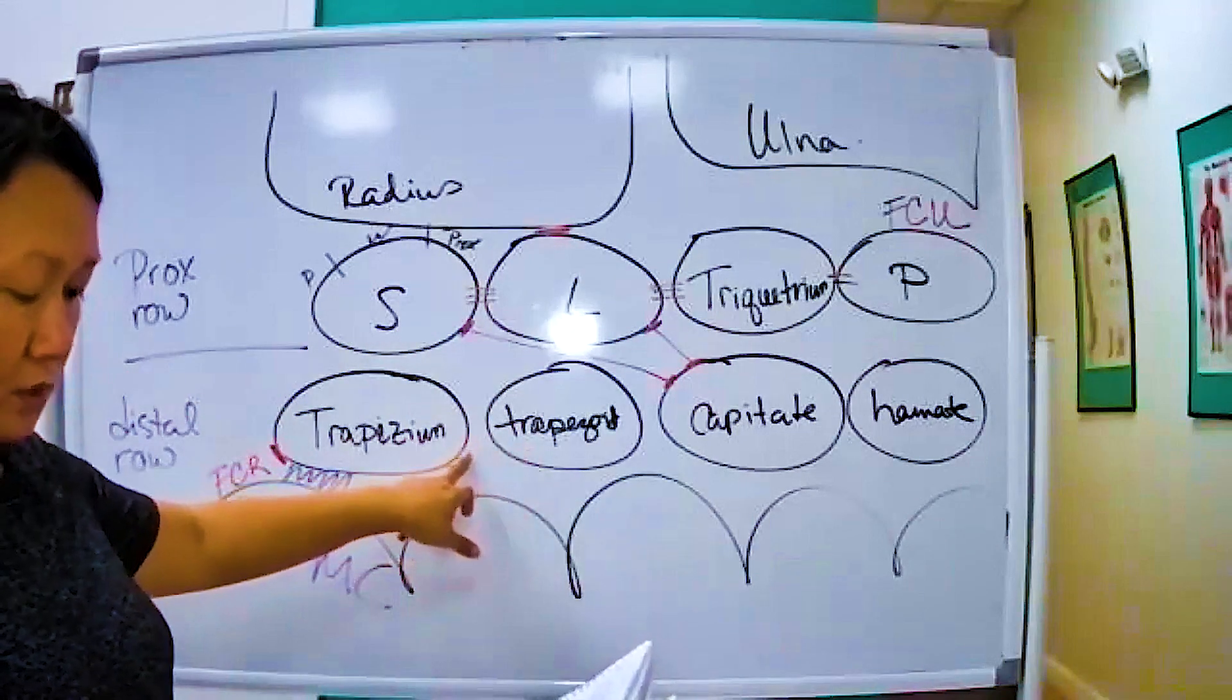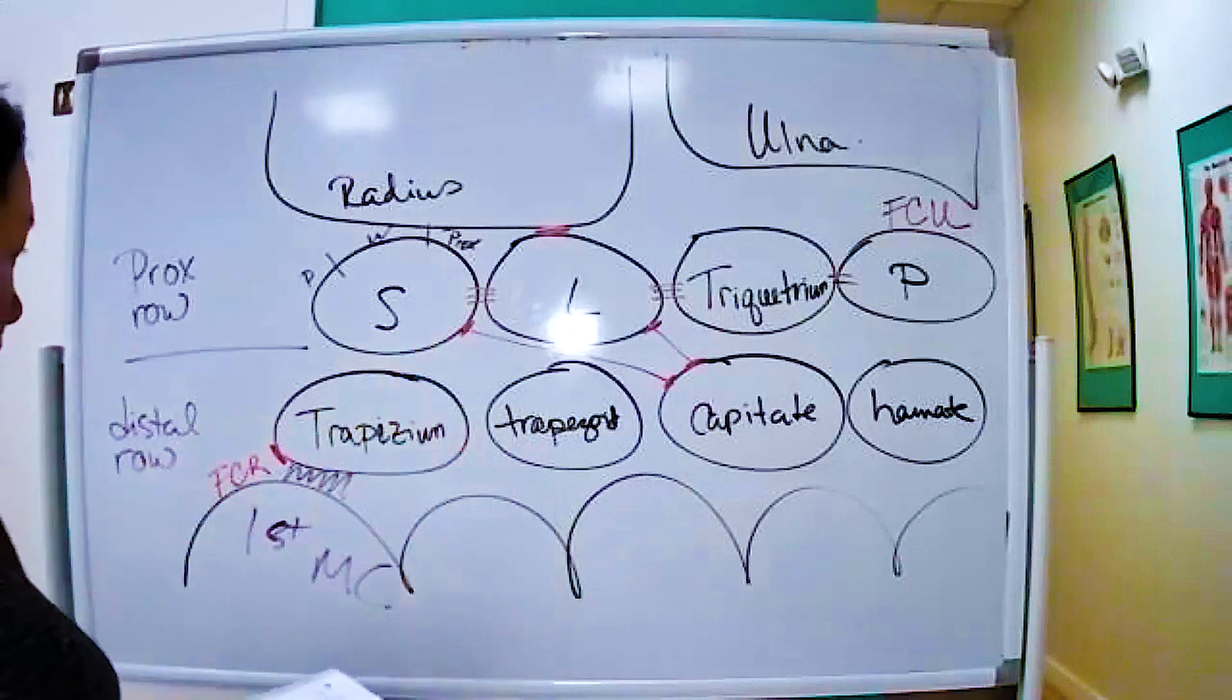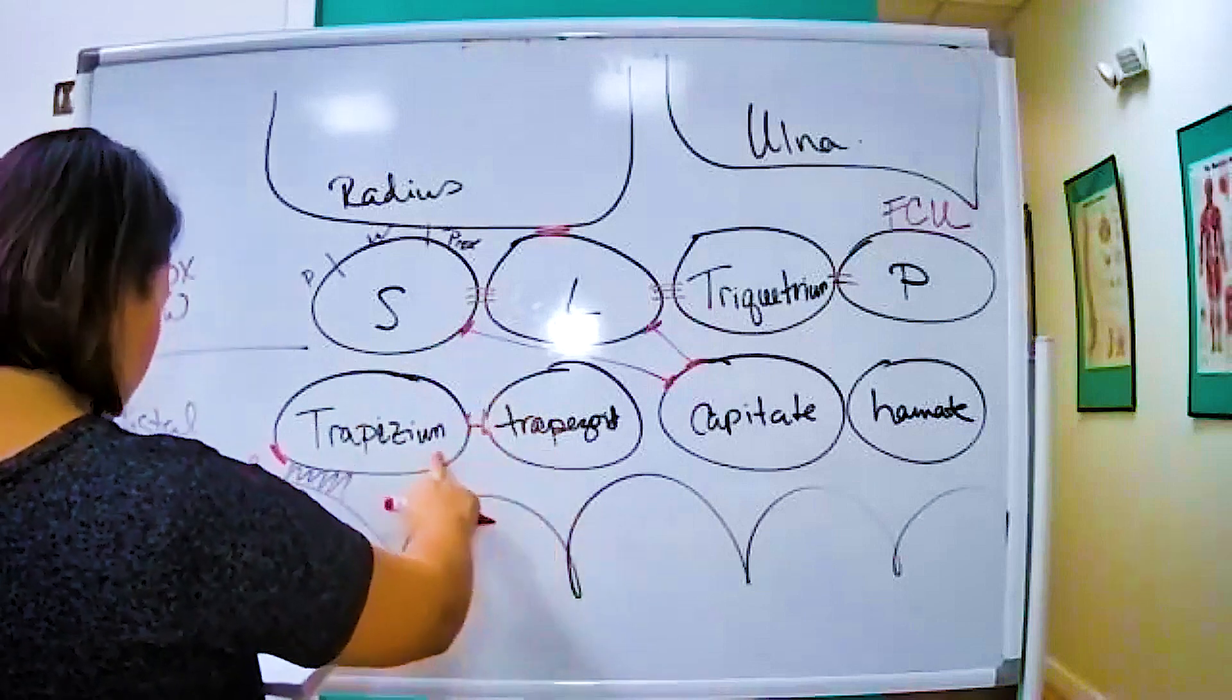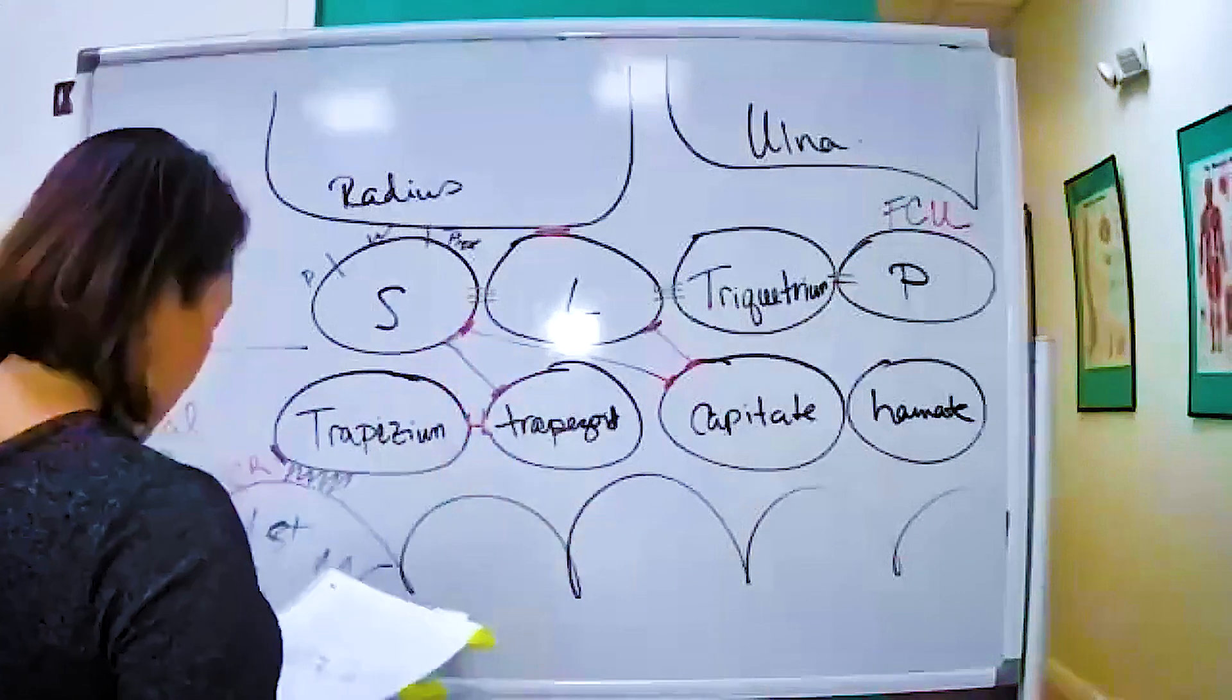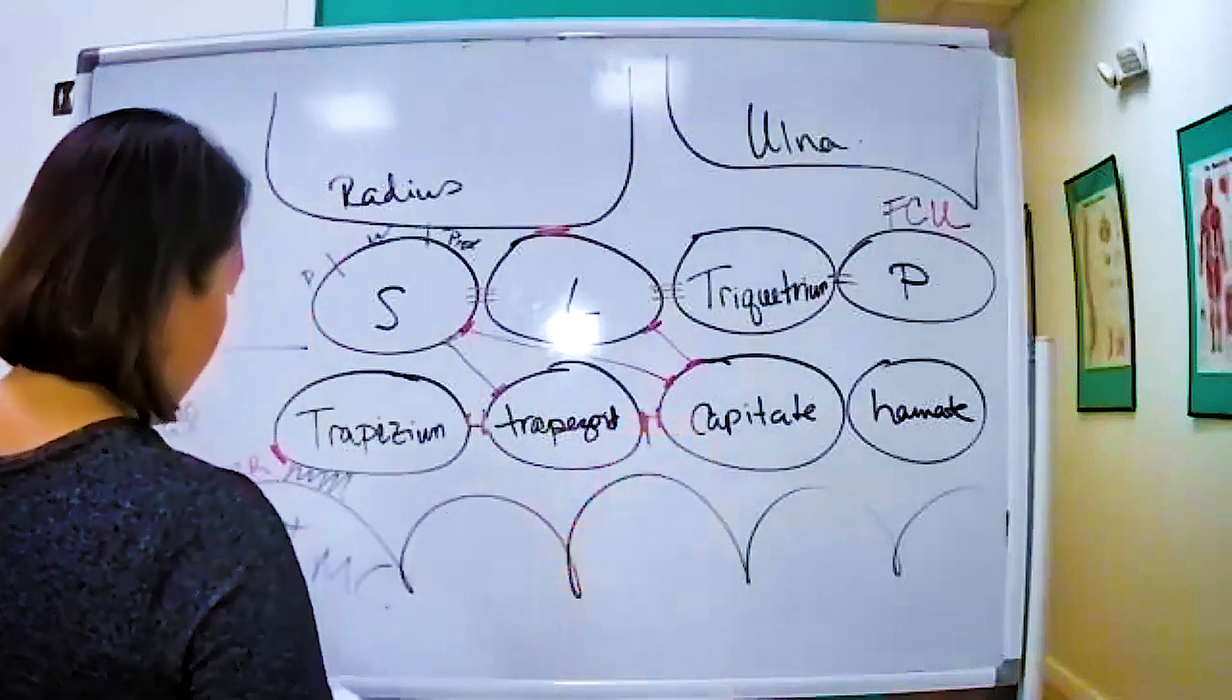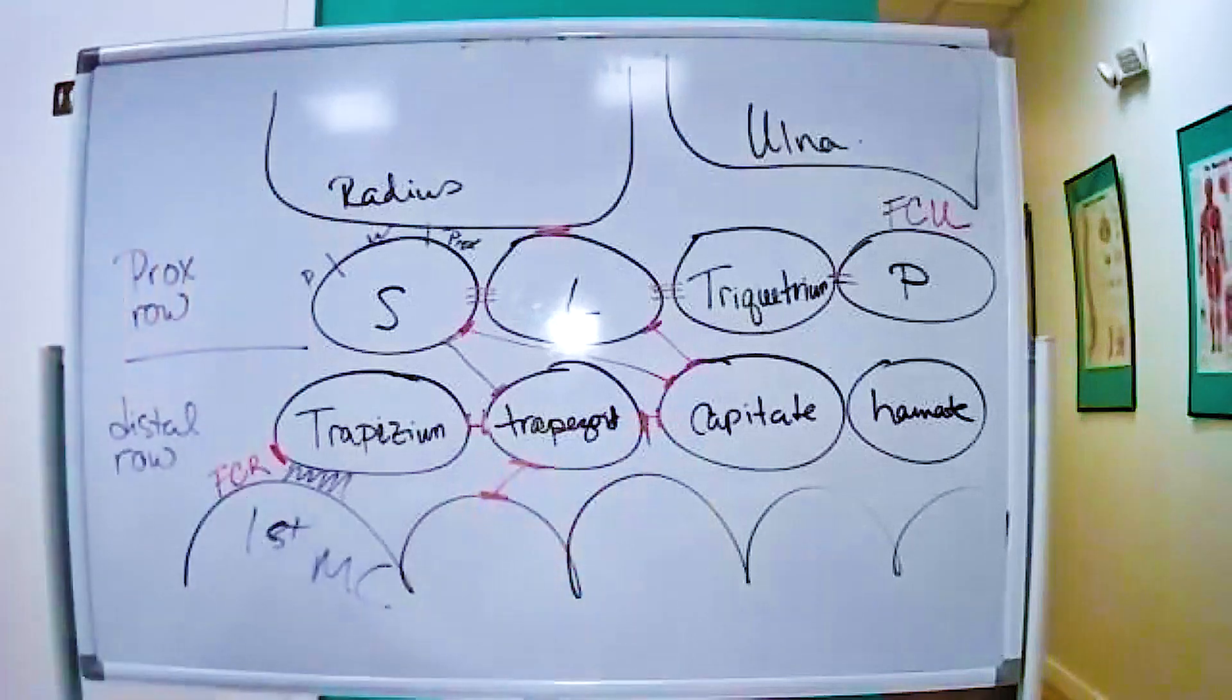And then let's see the trapezoid. The trapezoid articulates with the trapezium and it articulates with the scaphoid, so it articulates here. The trapezoid articulates with the trapezium, it also articulates with the scaphoid, it articulates with the capitate, and articulates with the second base, the metacarpal.